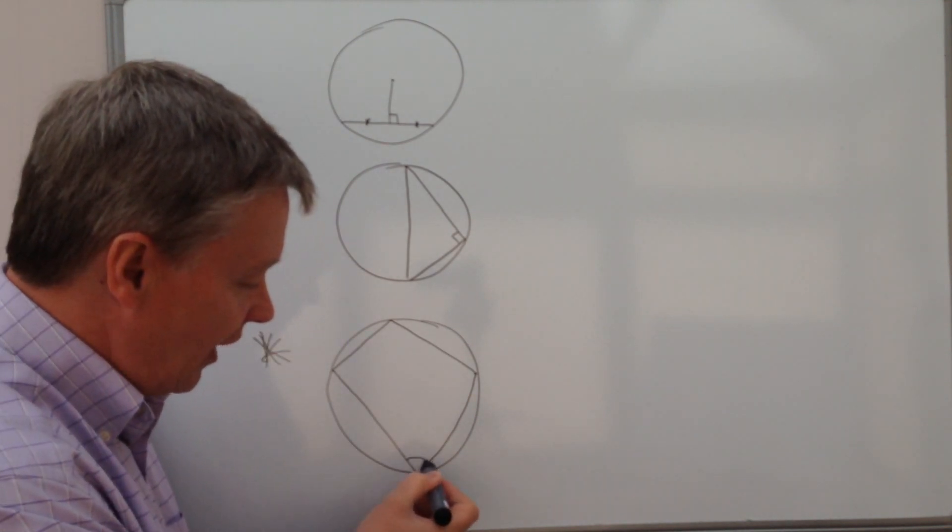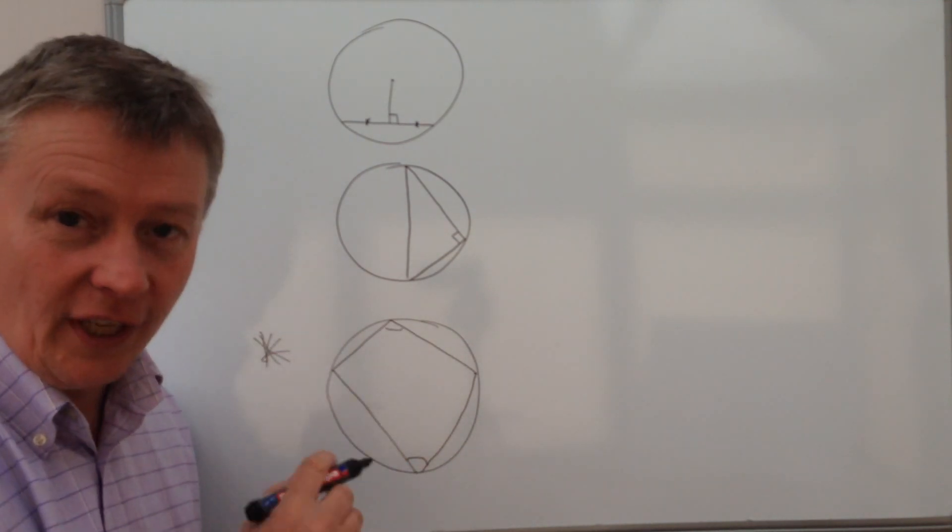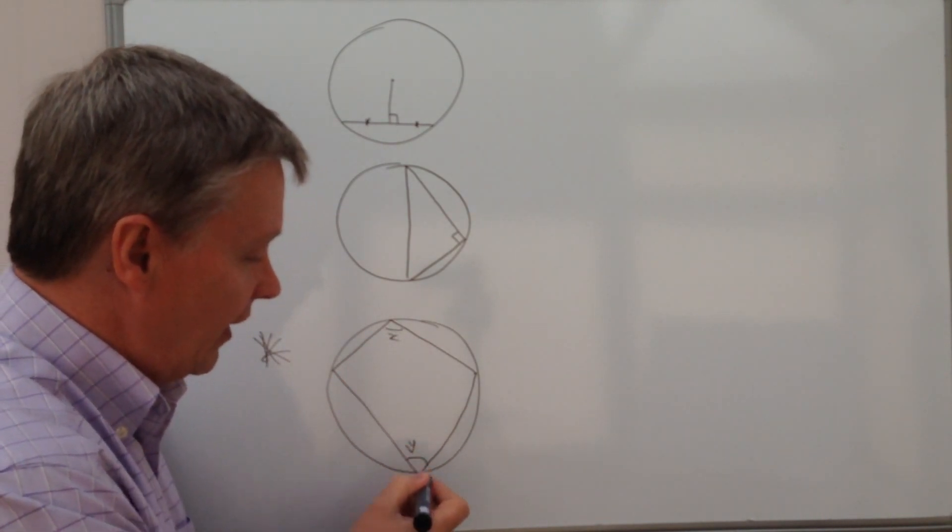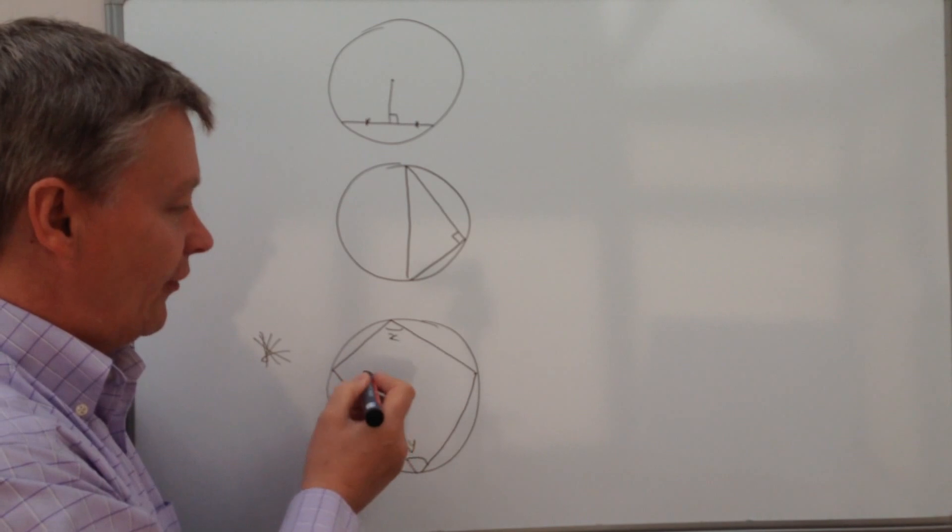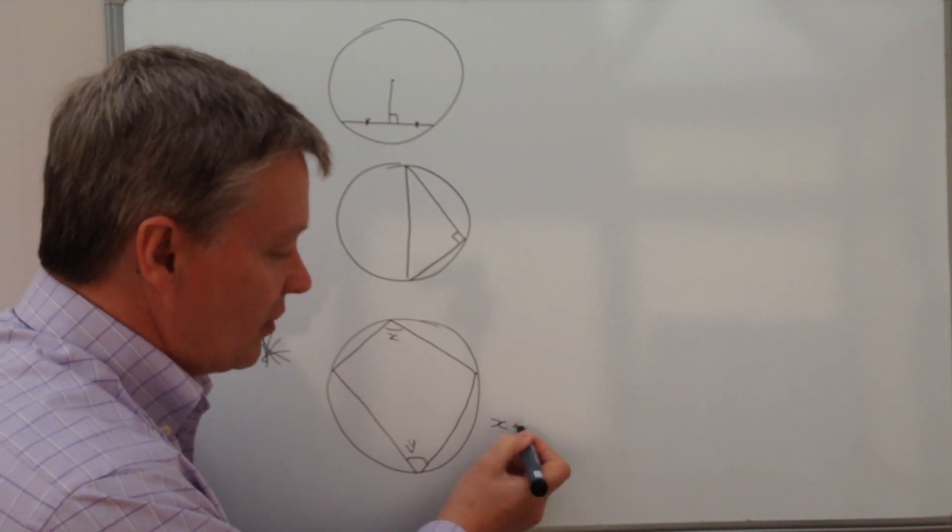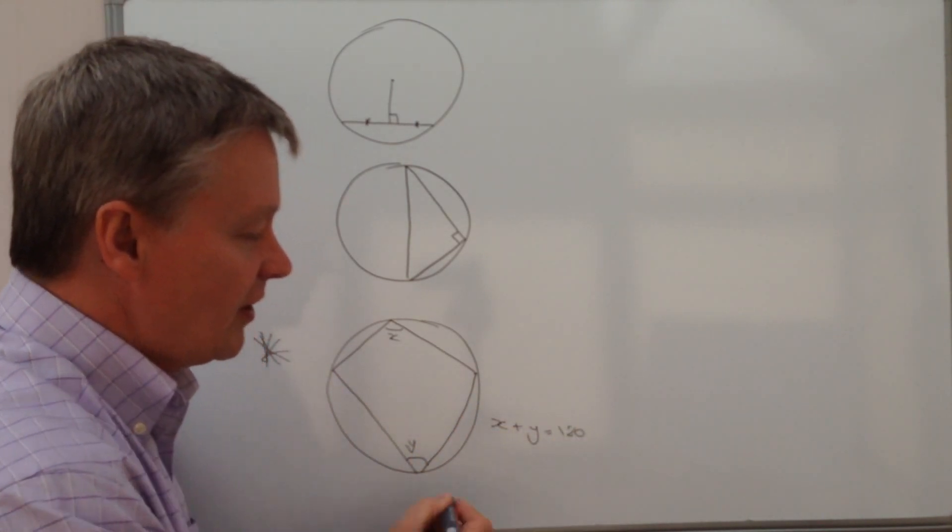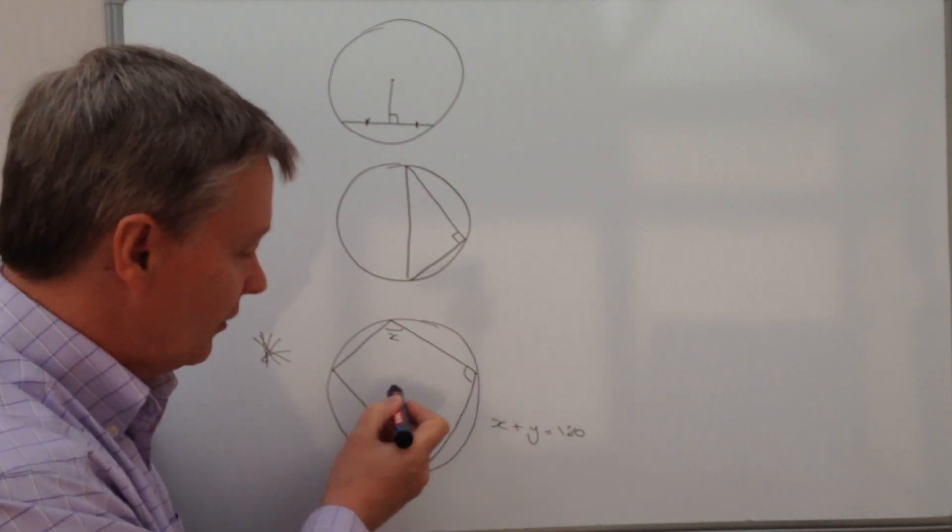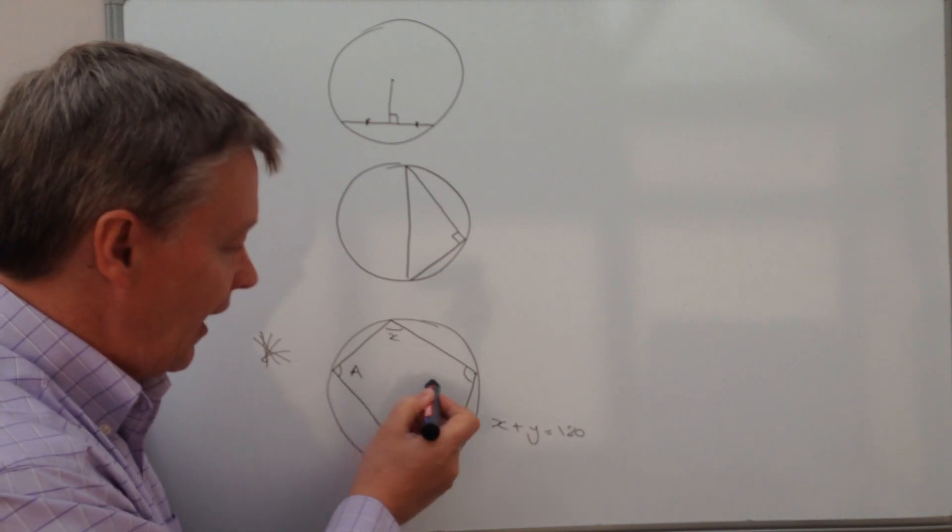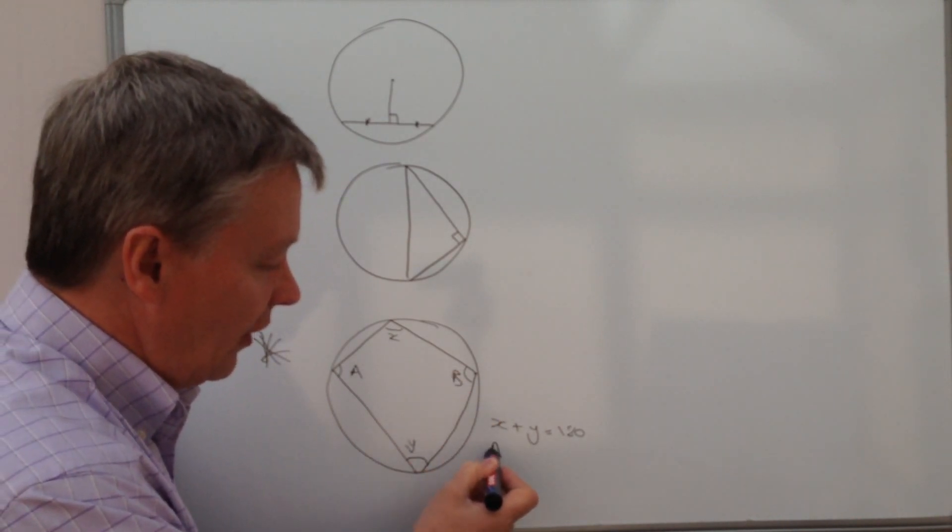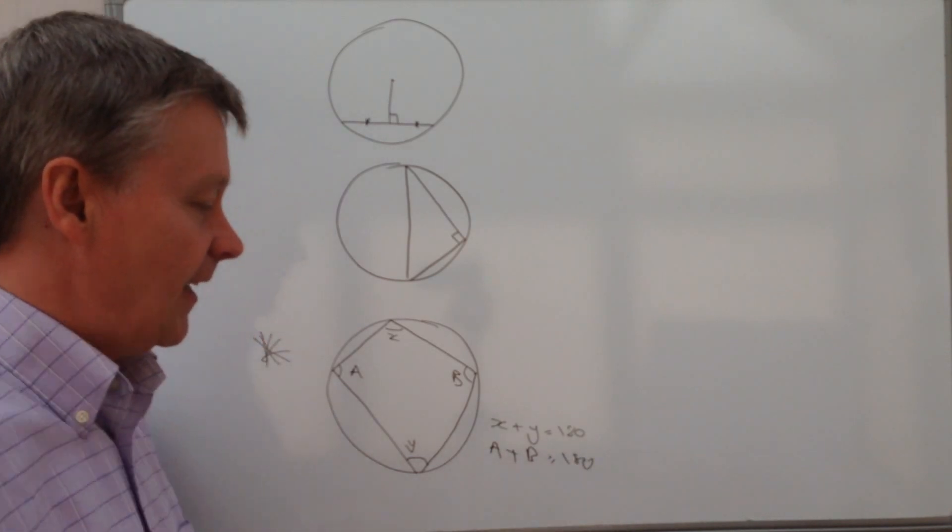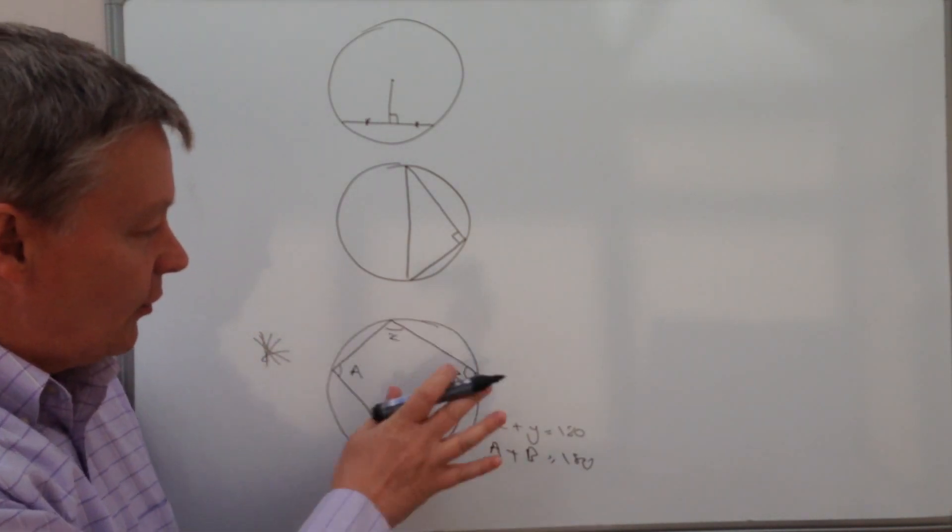So the thing that you need to be aware of with this, and it does come up quite a lot, is that the opposite angles equal 180 degrees. So we've got X and Y, and X plus Y equals 180 degrees, and also the opposite ones across the horizontal here. So let's call that A and B, and we've got A plus B equals 180. This is quite a good theorem, it's used quite a lot.